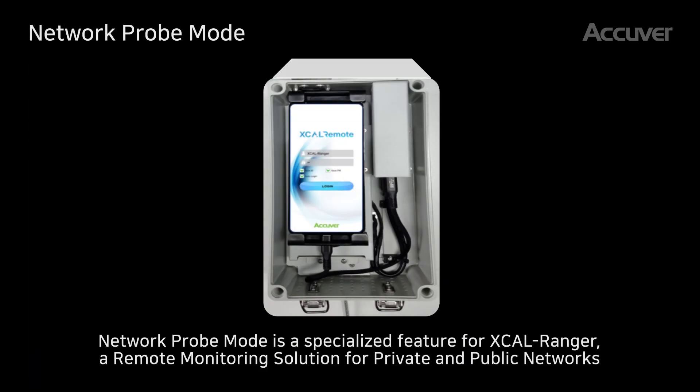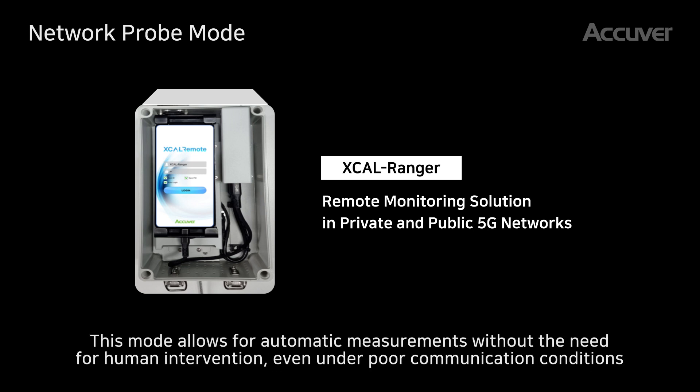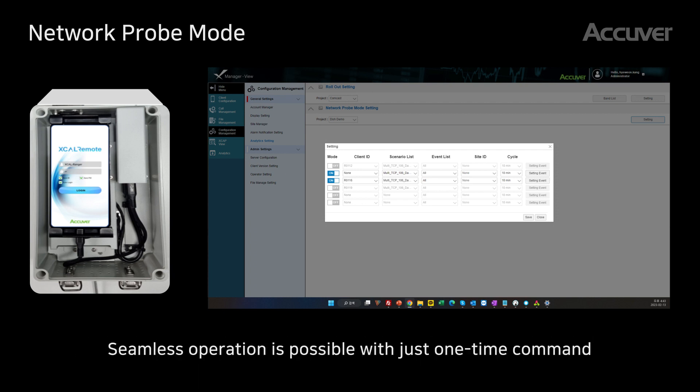Network probe mode is a specialized feature for EXCL Ranger, a remote monitoring solution for private and public networks. This mode allows for automatic measurements without the need for human intervention, even under poor communication conditions. Seamless operation is possible with just a one-time command.